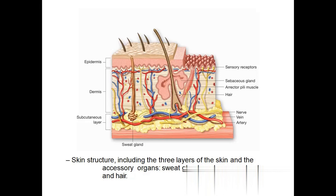The middle part we call the dermis. In the dermis, we have the blood supply — arterial supply, venous drainage, and nervous supply — all lie in the dermis only. The sweat glands, sebaceous glands, and hair follicles are also important structures present in the dermis.